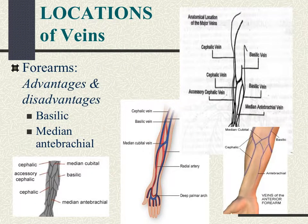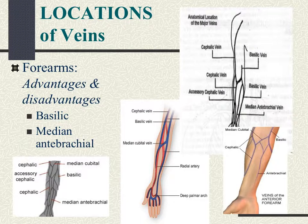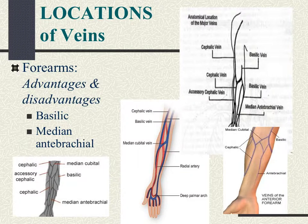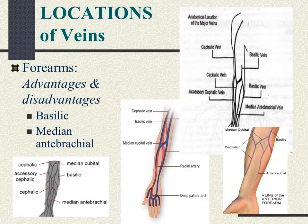In the forearm are the basilic vein and the median antebrachial. The basilic is on the ulnar side — it can be difficult to find but is a large vein, tends to roll, and has numerous valves. The median antebrachial can be very difficult to find, has many nerve endings, and infiltration occurs easily, so we don't use that one as often. We really need to pay attention to where the nerves, arteries, and veins are in proximity to the site we are selecting.